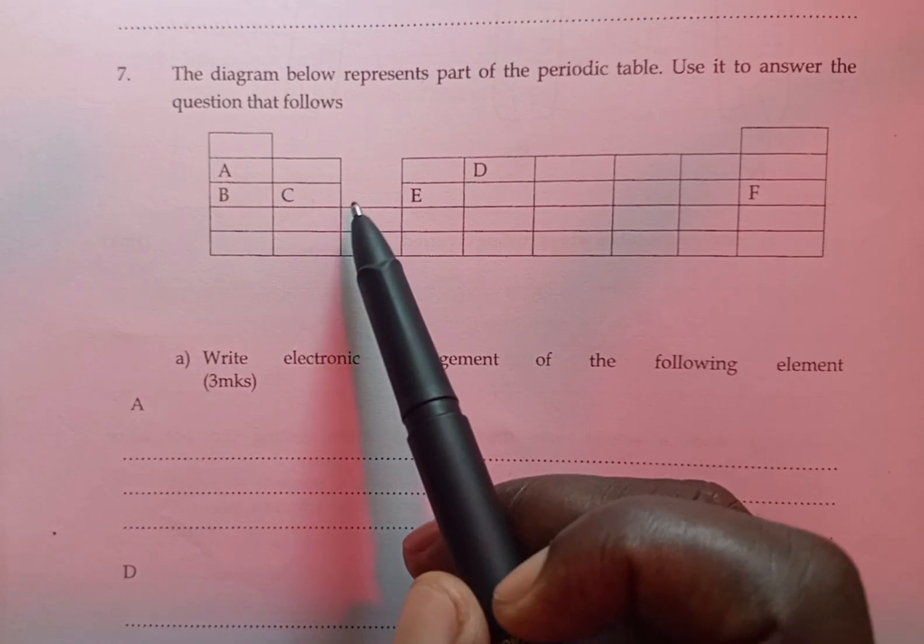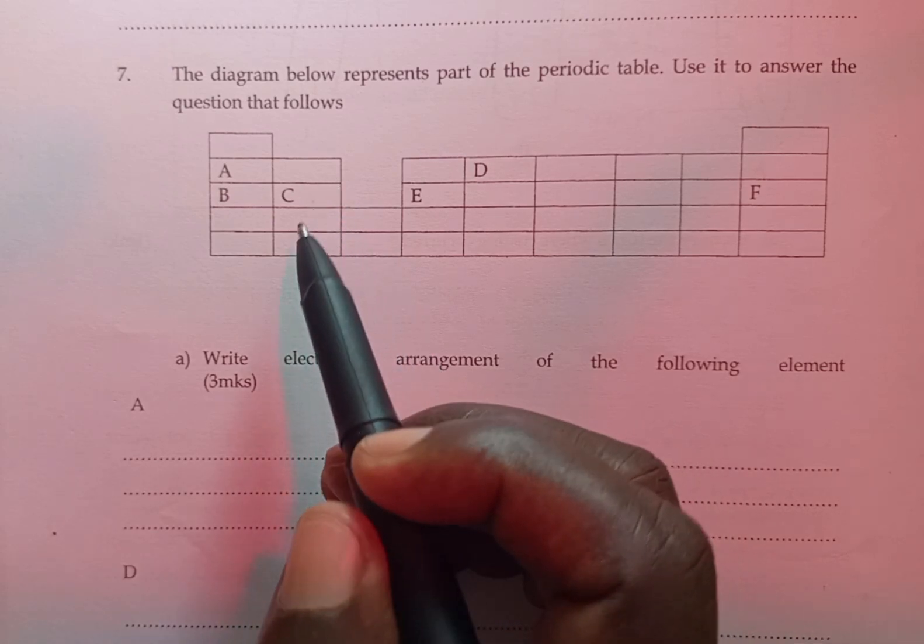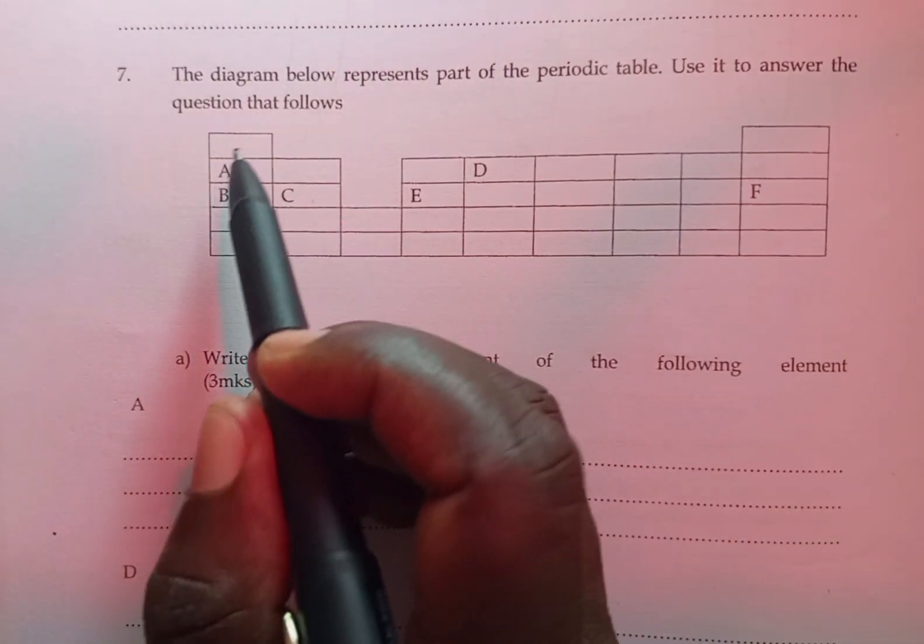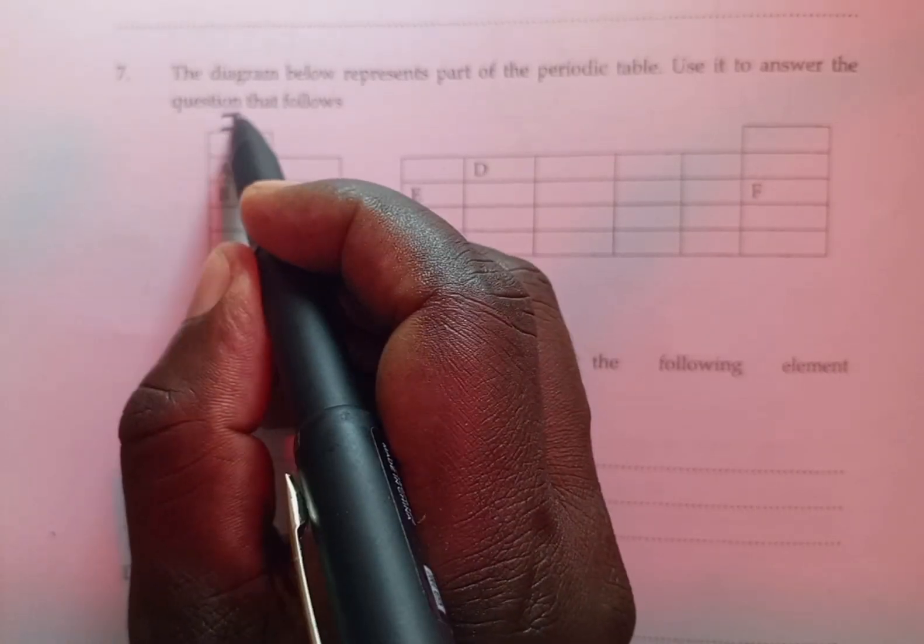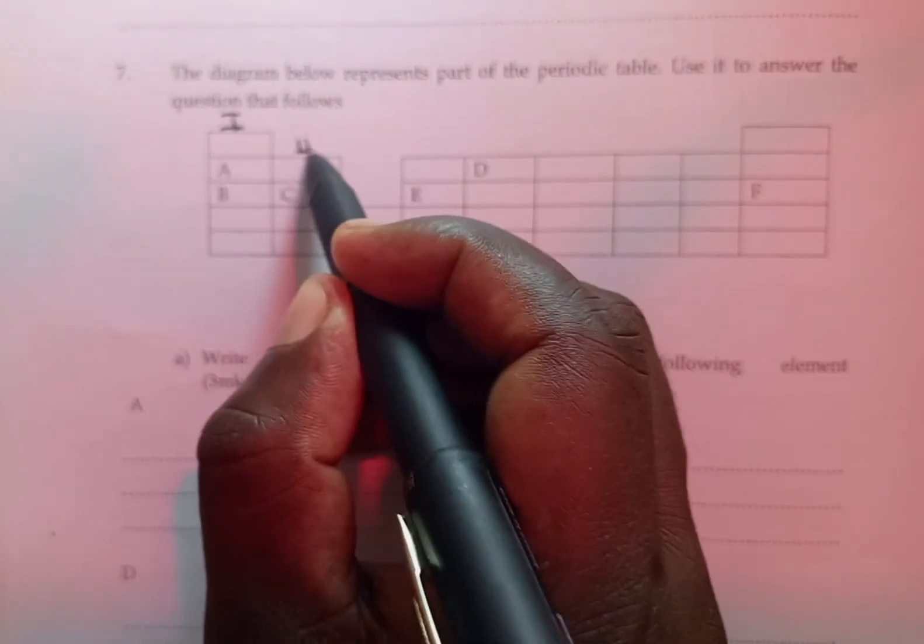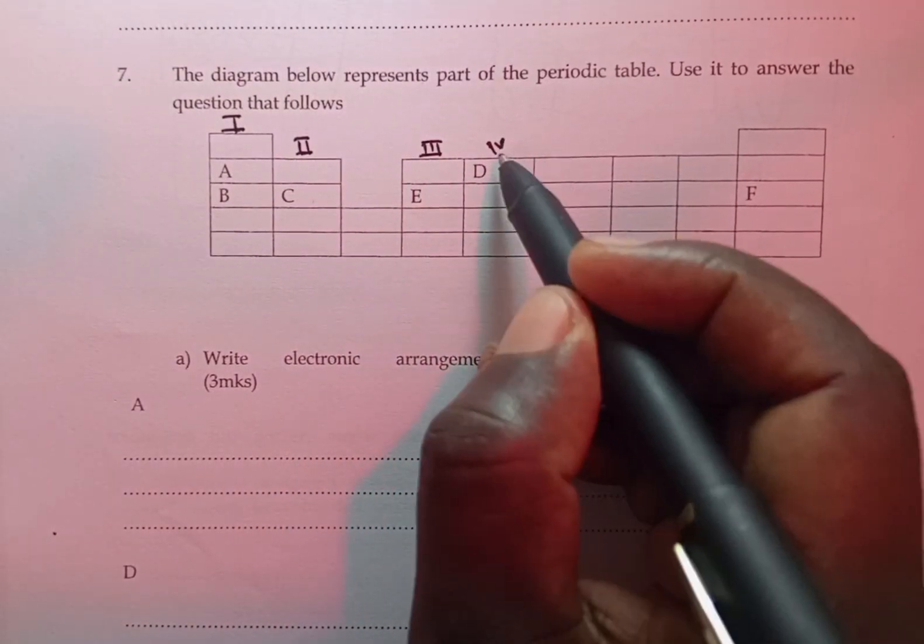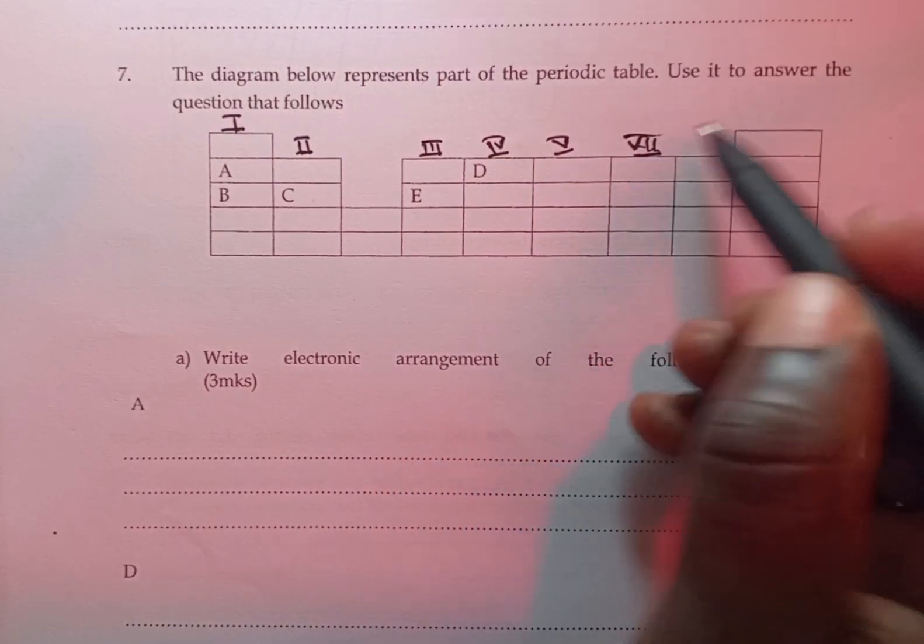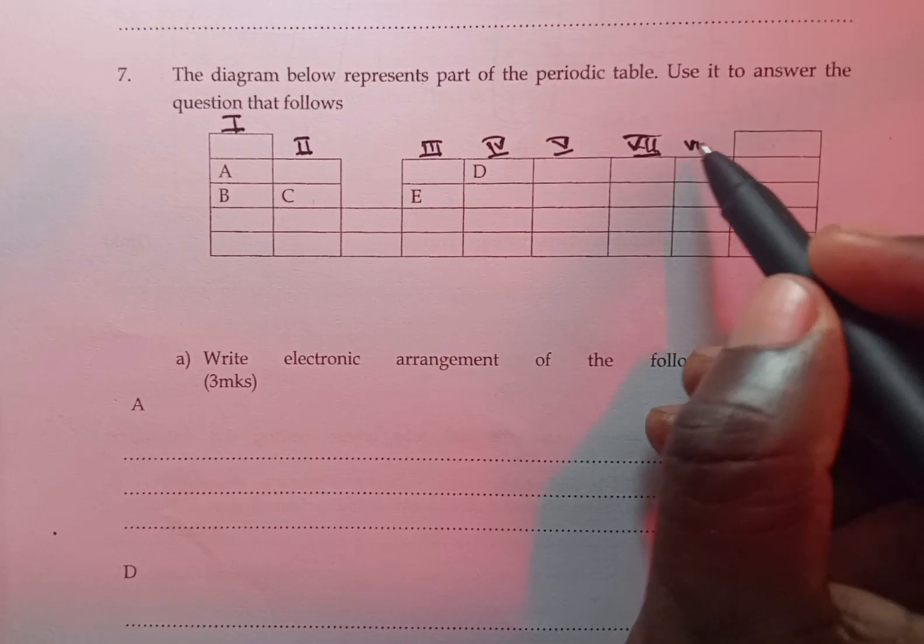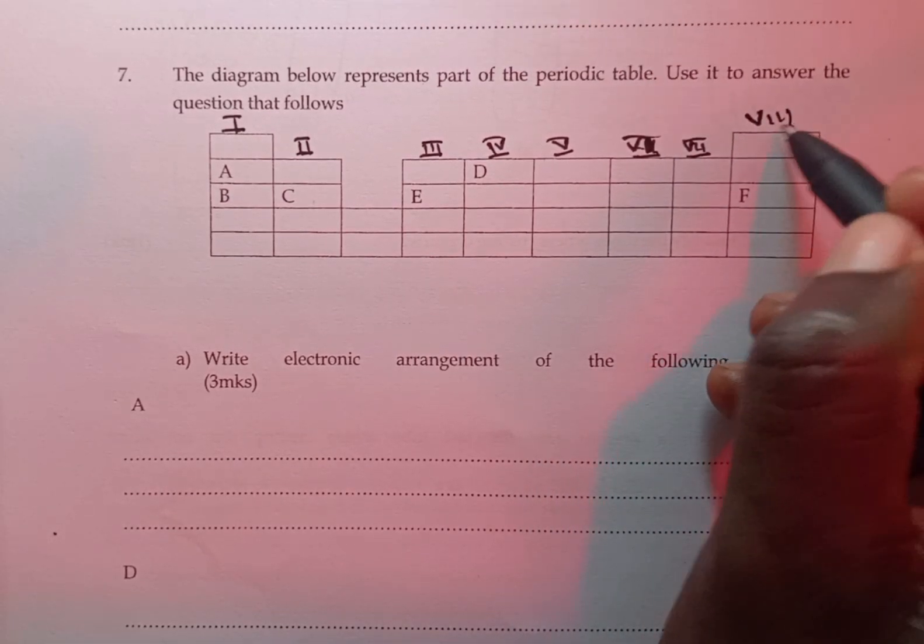Remember, the periodic table is made up of periods and groups. Periods are horizontal while groups are vertical. So the first column here gives us group 1, the second one group 2, the third group 3, 4, we have group 5, we have group 6, group 7, and lastly we have group 8.